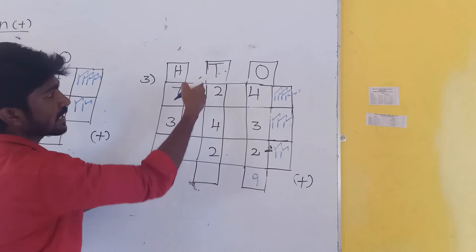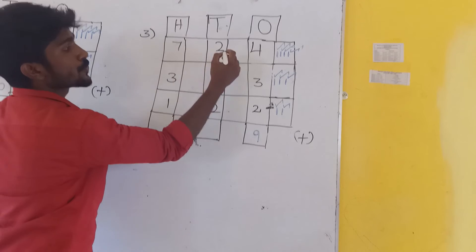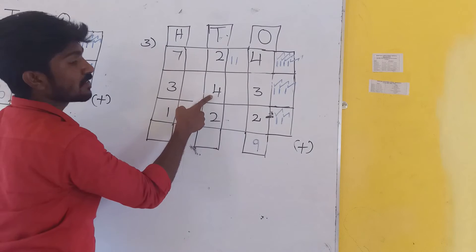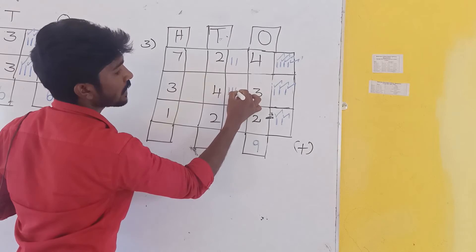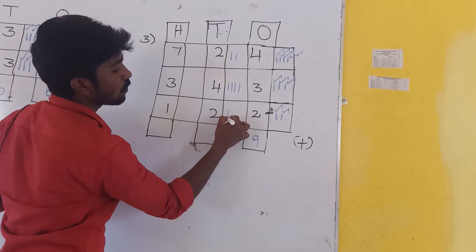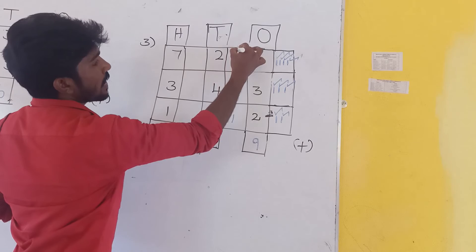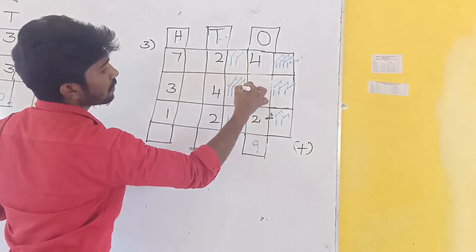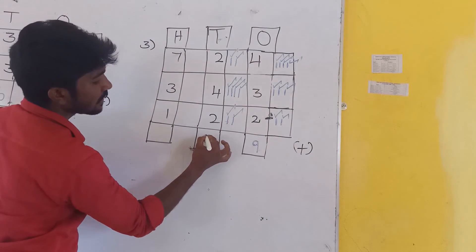Next, 10s value. First number is 2, draw 2 lines. Second value is 4, draw 4 lines. Third value is 2, draw 2 lines. Now add these lines: 1, 2, 3, 4, 5, 6, 7, 8. The answer is 8.